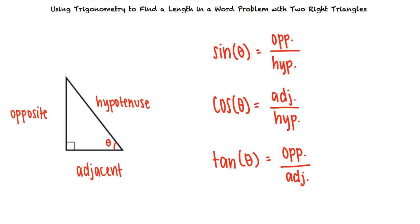Using these identities, we can solve word problems in which we are given two triangles and are asked to find a certain length. Let's take a look at an example problem.